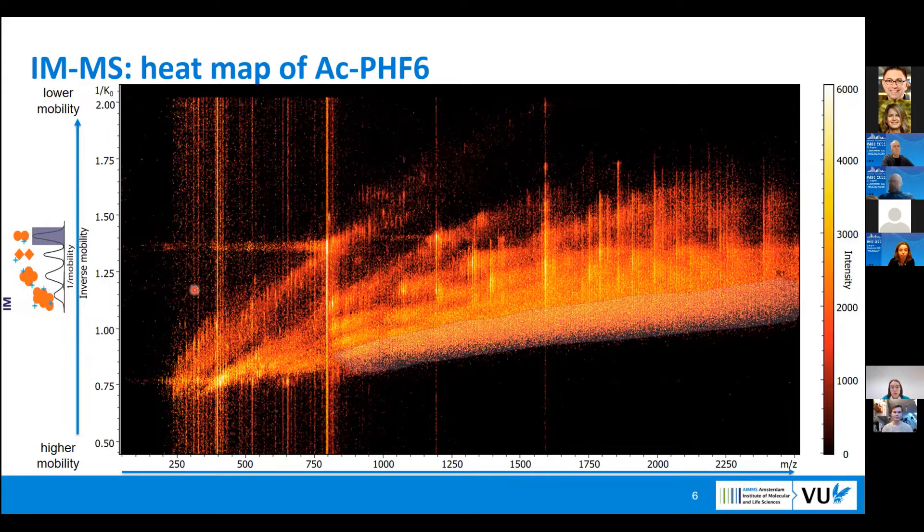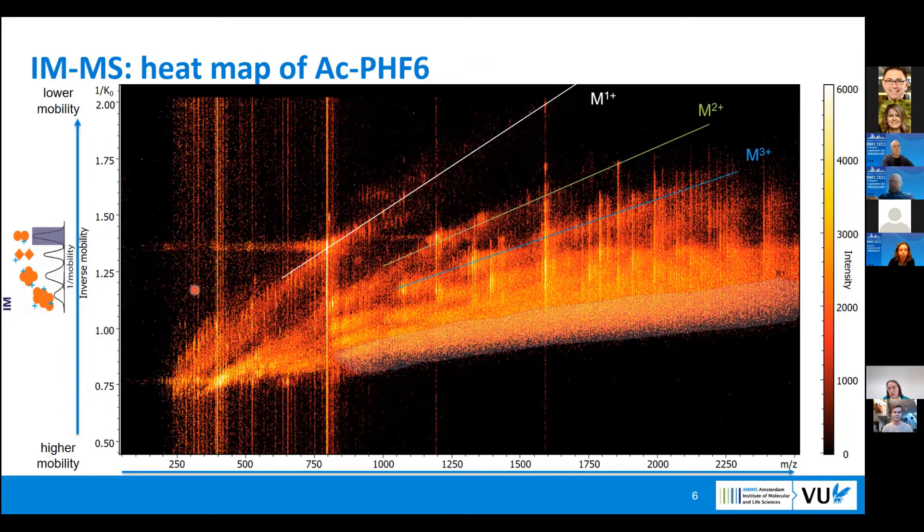What we see on the heat map: we can follow the charge state trends. We have singly charged ions, we have doubly charged, triply charged, et cetera, up to the aggregation region, how we call it, where we cannot see really separate different charge states.